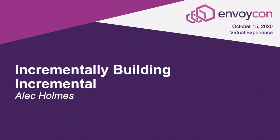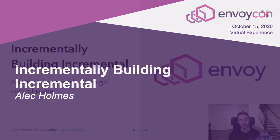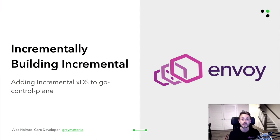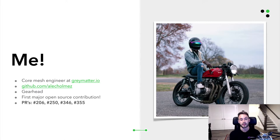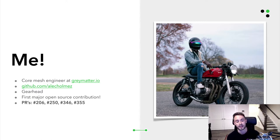Hey everyone, my name is Alec, and I'm really excited to talk to you today about incrementally building the incremental implementation in Envoy's Go Control Plane upstream repo. I'm a core engineer at Gray Matter, and I've worked there since inception. At Gray Matter, we have large customers — we operate in production in a large global enterprise, and in order to meet scale requirements, we found that incremental is a necessary feature set required by Go Control Plane. So we set about to add it.